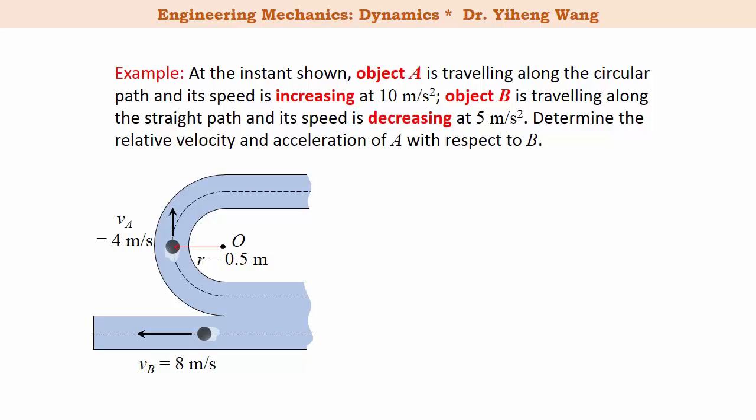Since B moves along a translating path, we can apply our equations of relative motions that we derived earlier. First we set up a fixed Cartesian coordinate system x and y, and the absolute velocity of object A given in vector form is 4j, and the absolute velocity of object B is negative 8i.